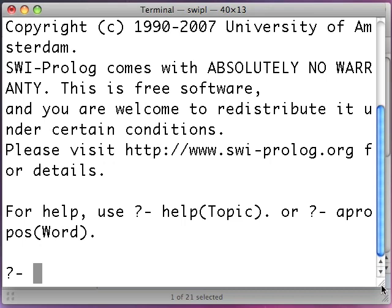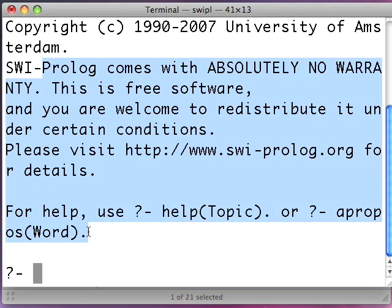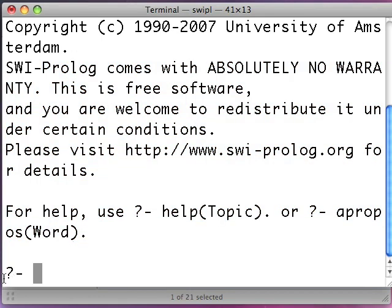So this is Prolog's command line. So you'll notice it prints out a whole bunch of boilerplate here, so forget about that. Now, what's really interesting is this. This is the Prolog prompt, question mark dash, and here's how it works. It gives you this prompt, which basically lets it know that it's ready for you to do something.